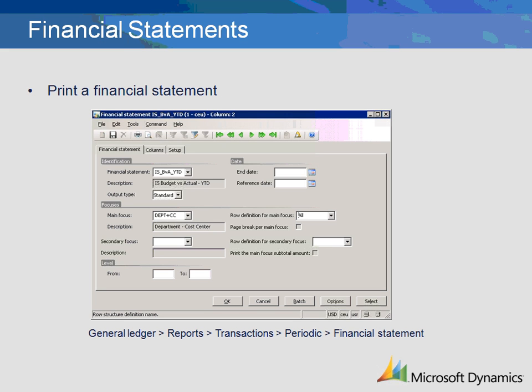A financial statement can be printed with two sets of focuses. First, we select the financial statement that we would like to print. These statements must be set up previously to be selected in this form. In this example, we are going to print Financial Statements ISBVA YTD.